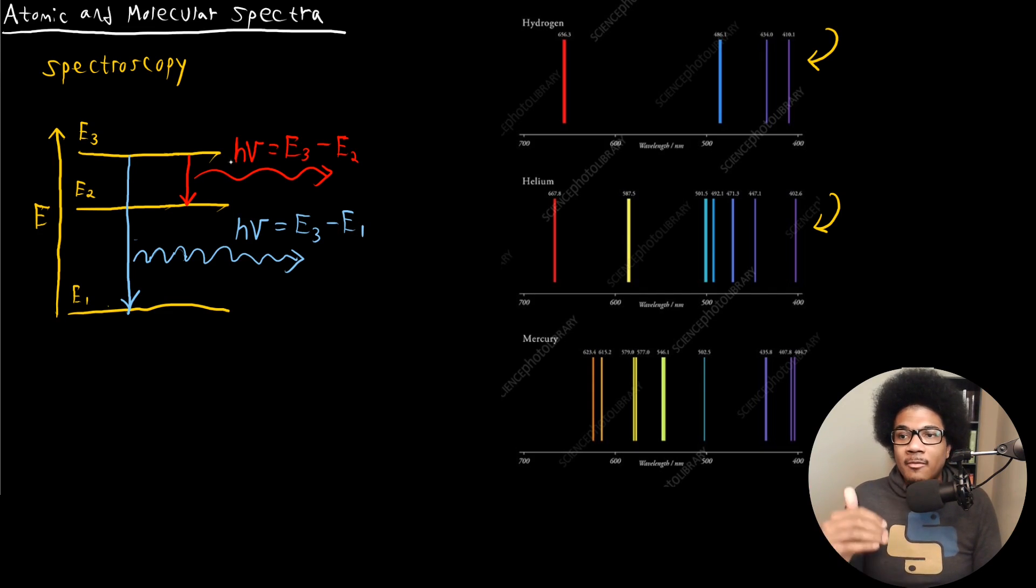So every single atom would have its own electronic structure. And using this type of spectroscopy, you can figure out what that electronic structure is. This is really the greatest evidence that we have of the quantization of energy, because if energy was not quantized, then all of these atoms would produce a continuous spectrum of light. But we see these discrete bands, and so we know that energy has to be quantized in some way.